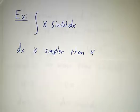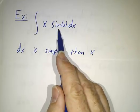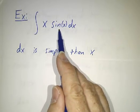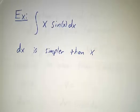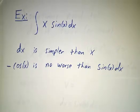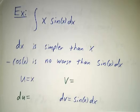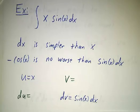And if you integrate sin(x), you get negative cos(x), and that's no more complicated than sin(x). So in this case, we want to let u be x and dv is sin(x) dx.